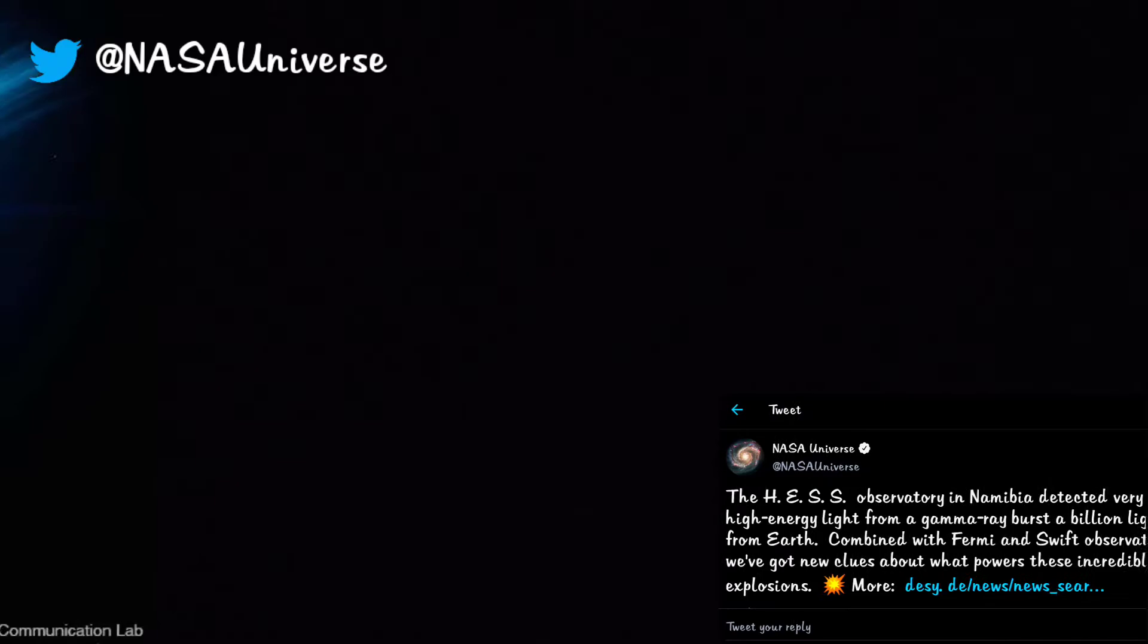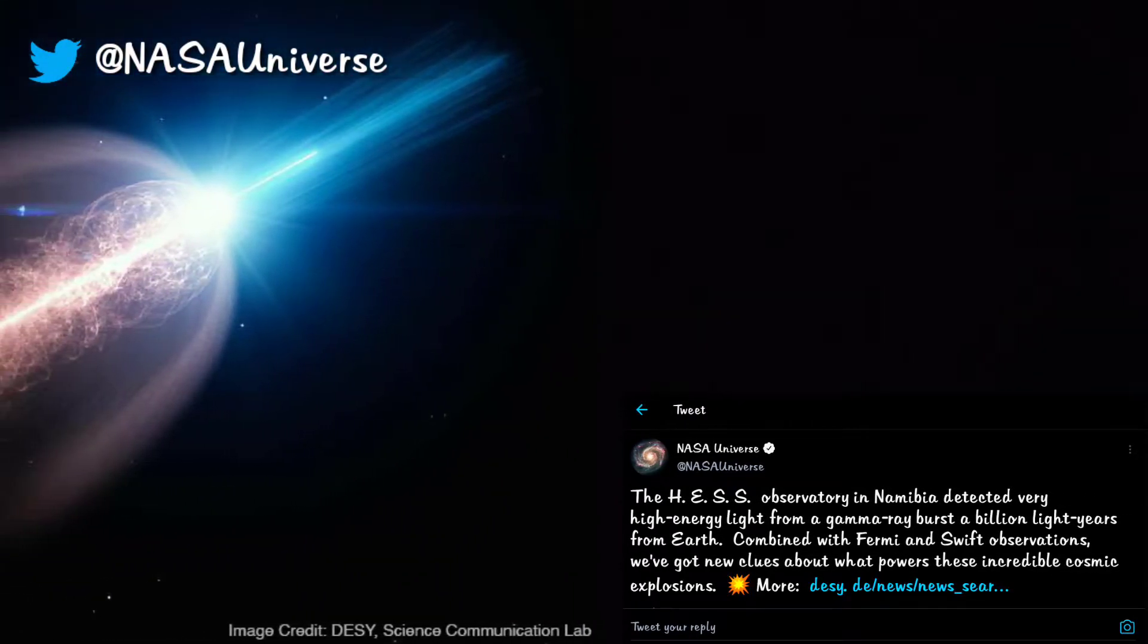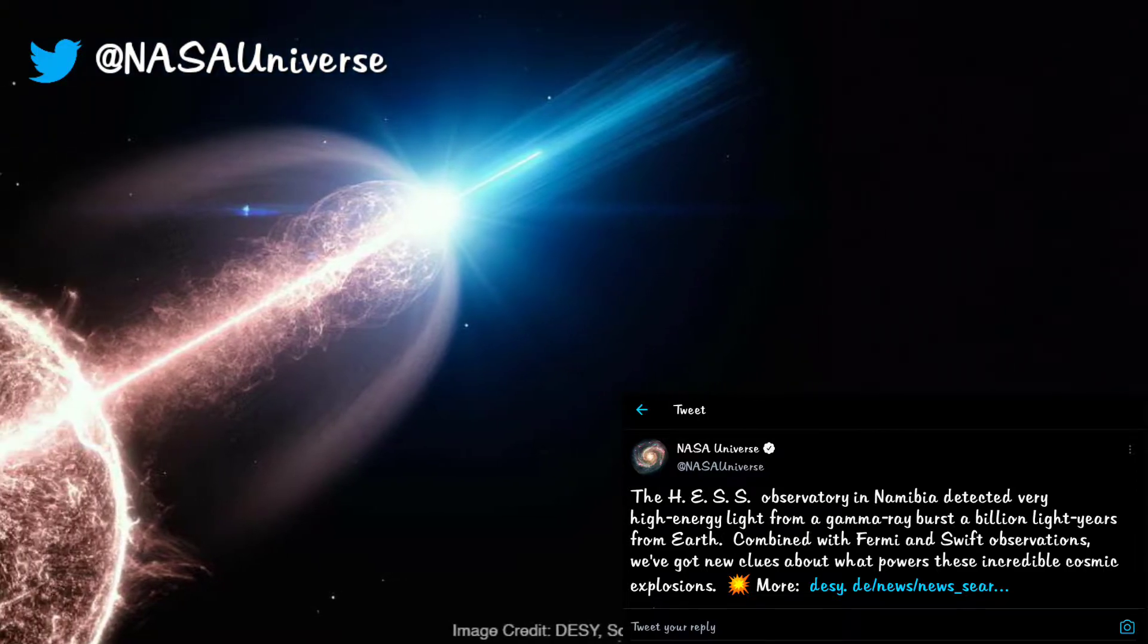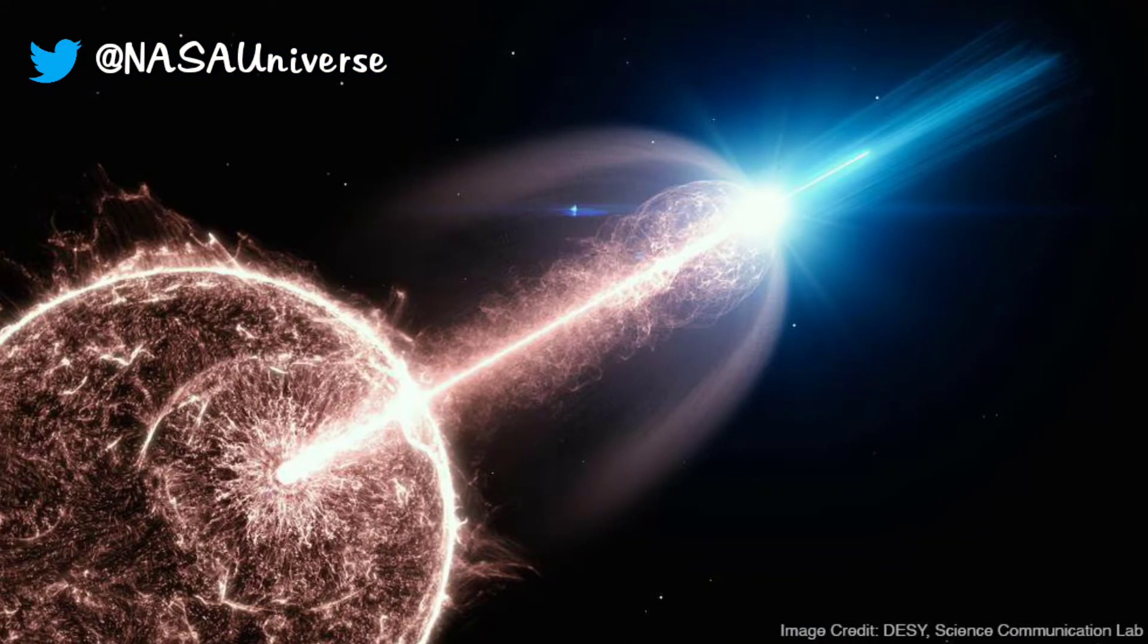The High Energy Stereoscopic System, or HESS Observatory, in Namibia detected very high energy light from a gamma ray burst a billion light years from Earth. Combined with Fermi and Swift observations, we have got new clues about what powers these incredible cosmic explosions.